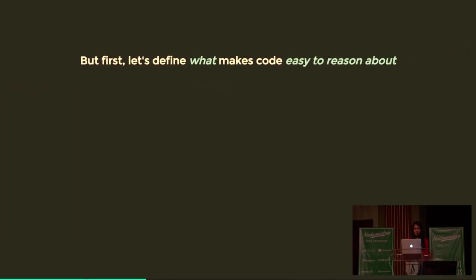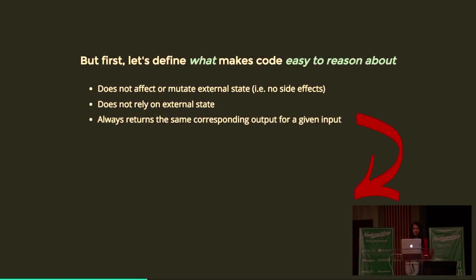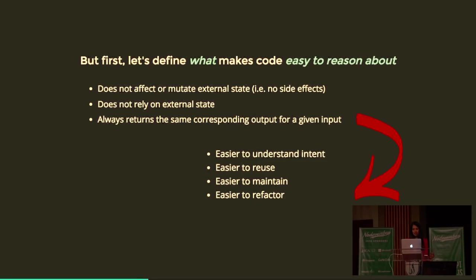Before getting started, I want to create a definition for what makes code easy to reason about. I'm going to say: when a program does not affect or mutate external state, it's easy to reason about. It should not rely on external state. And it should always return the same corresponding output for a given input. These three characteristics lead to code that's easier to understand the intent of, easier to reuse, easier to maintain, easier to refactor, easier to test, and hence easier to reason about.